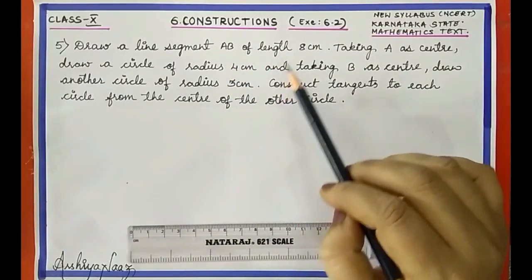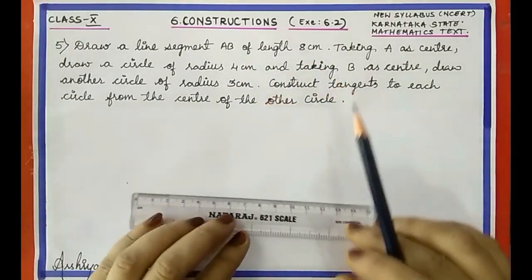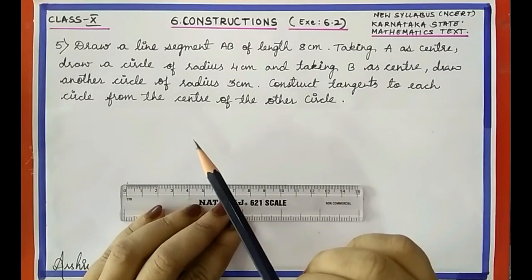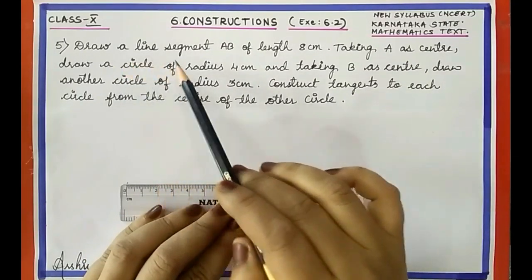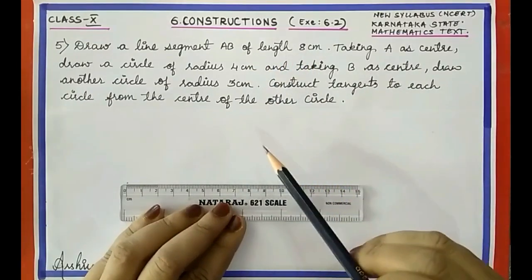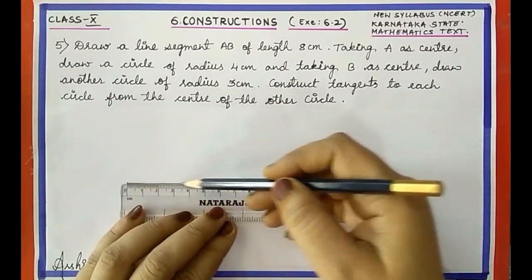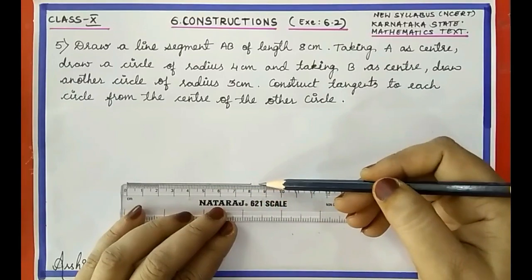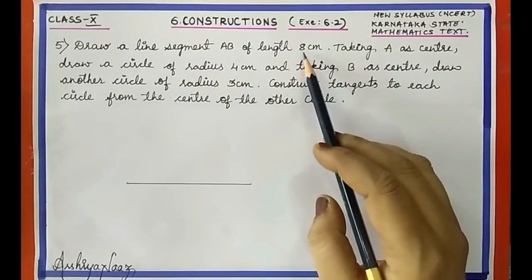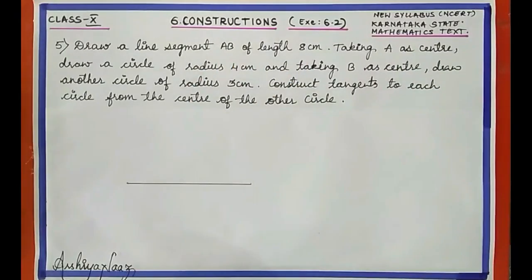So first let us draw a line segment AB of length 8 centimeter. This is a line segment of length 8 centimeter; let us name this line segment as AB.